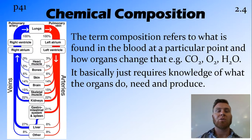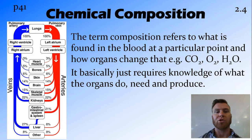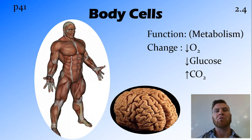To understand this dot point about the changes in the chemical composition of the blood, all you need to do is know what that particular cell or organ does, how it does that, what it needs and what it produces. So firstly we'll talk about general body cells — muscular cells, neural cells in the brain.